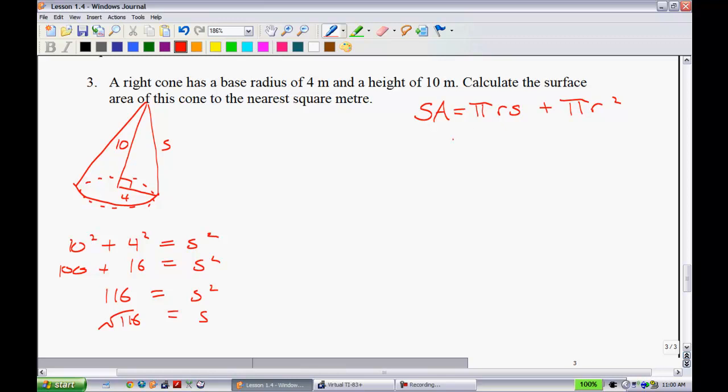You can write that in any different way around when you get to your last step. So we'll substitute this all in now. We have pi. Your radius is 4. Slant is root 116. Plus pi times your radius, 4, all squared.